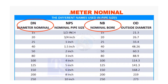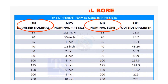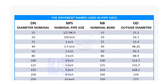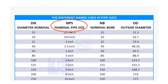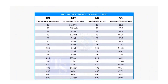DN and NB are the international and European metric methods used to describe NPS. The actual outer diameter, OD, is not the same as DN and NB. These are reference sizes only.